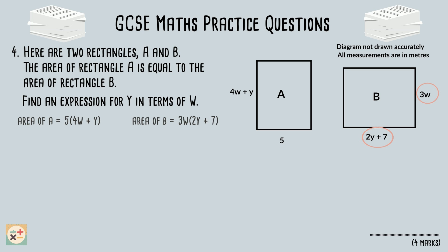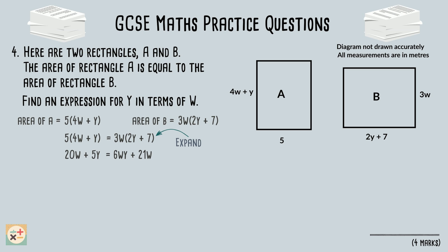Next we can form an equation using these areas. We know that the areas for both rectangles are equal, meaning that 5 lots of (4W + Y) is equal to 3W lots of (2Y + 7). Once we have written this out we can expand the brackets. Next, rearrange the equation so all terms containing W are on one side of the equals sign. We can then simplify this by taking 20W away from 21W.